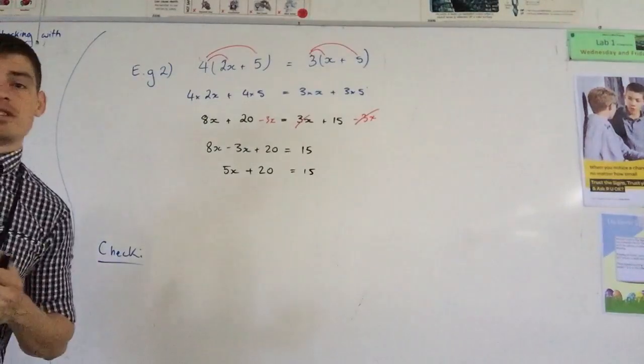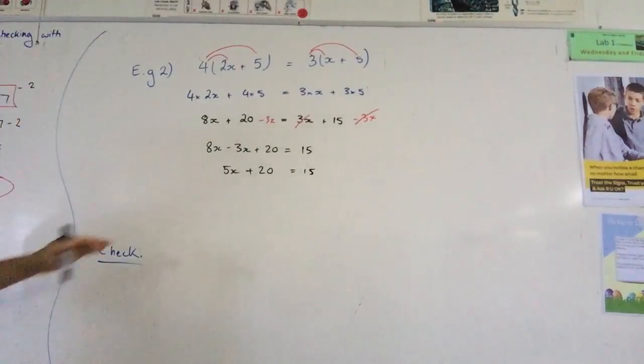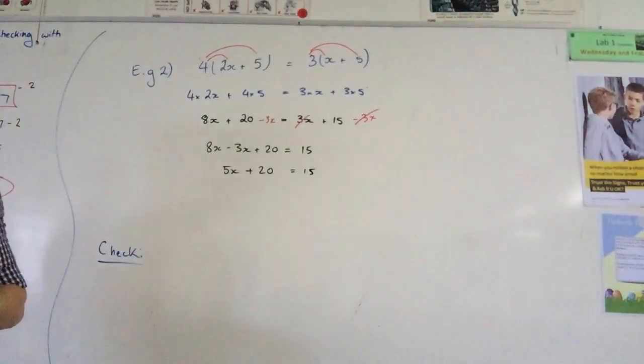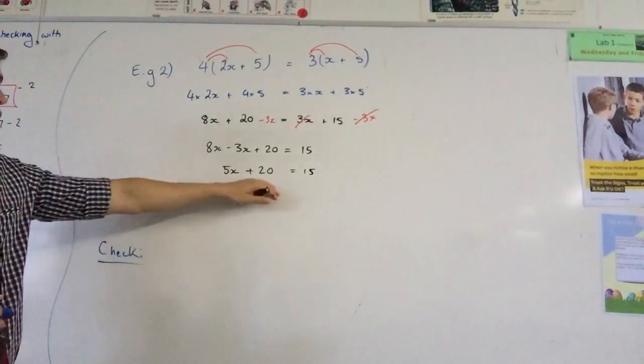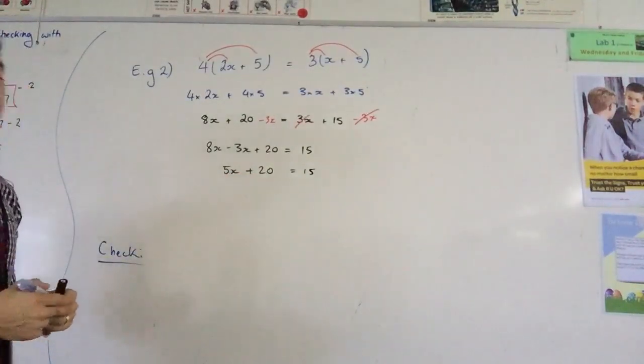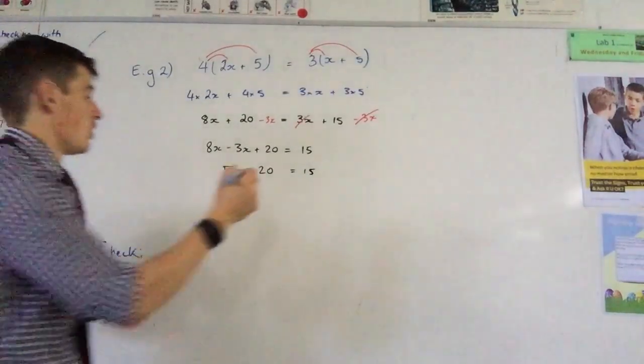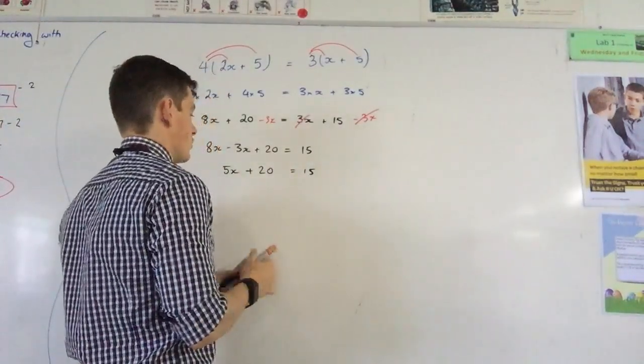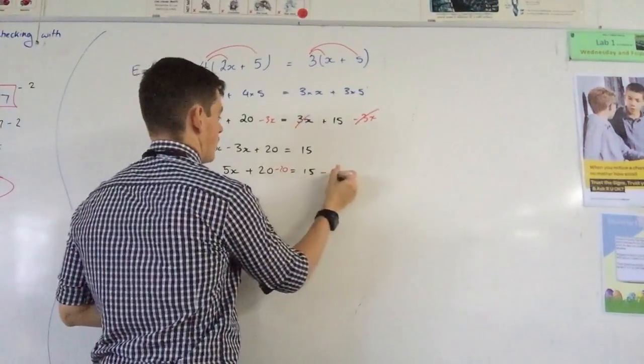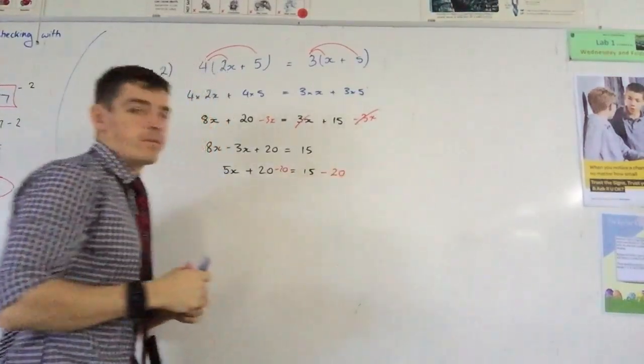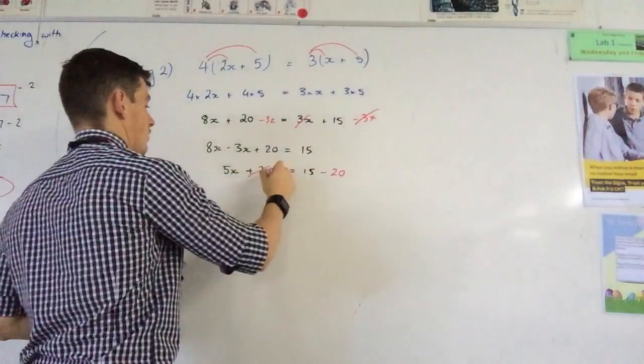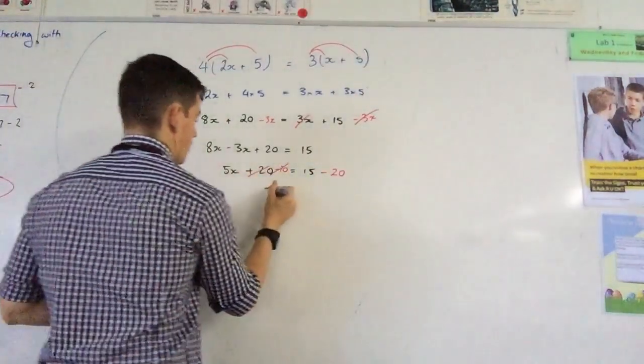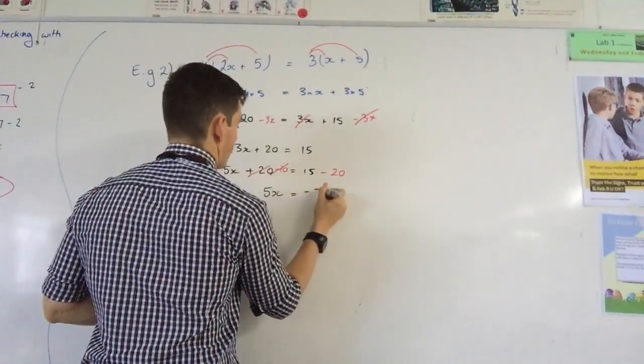Now this looks very similar to the problem that we just did. We've got a multiplication and an addition, and I want to get my x by itself on one side of the equation. So the first thing I do according to reverse BOMDAS is attack that 20. So to get rid of the 20, I subtract 20 from both sides. I subtract 20 from this side, and I subtract 20 from this side. What I'm left with now is the 20s on the right hand side cancel, and I'm left with 5x equals negative 5.